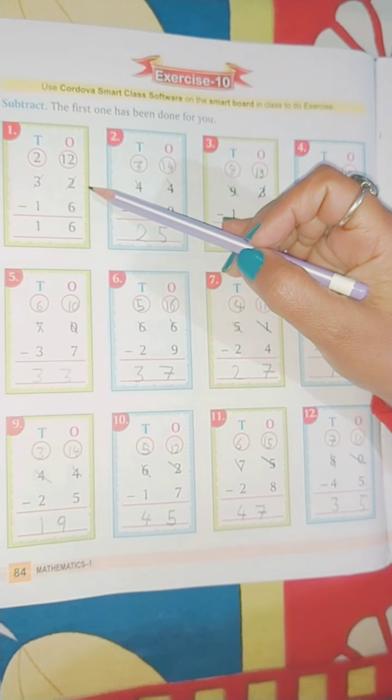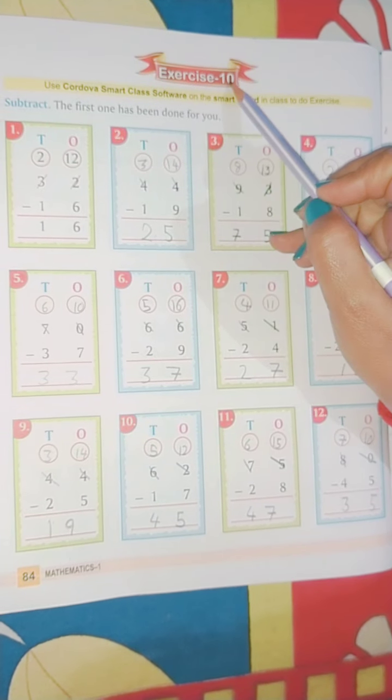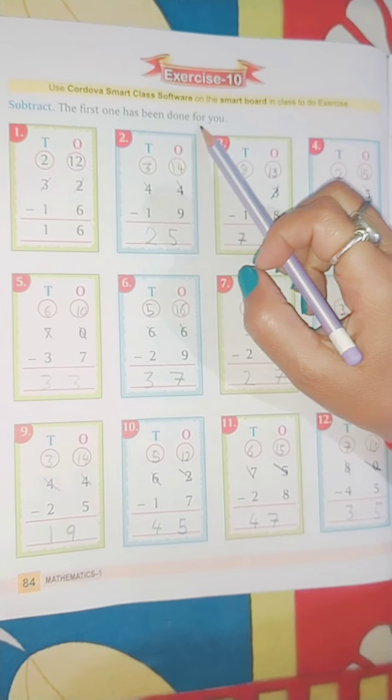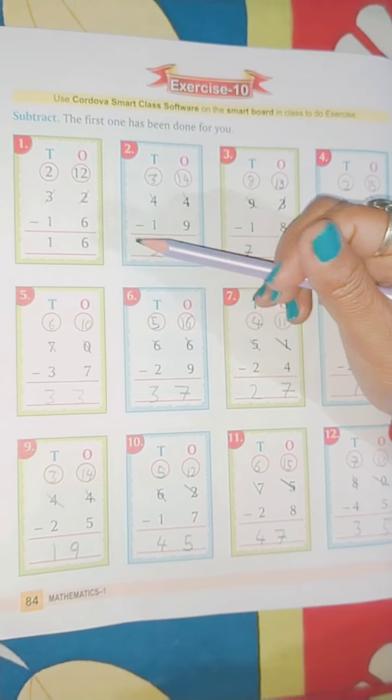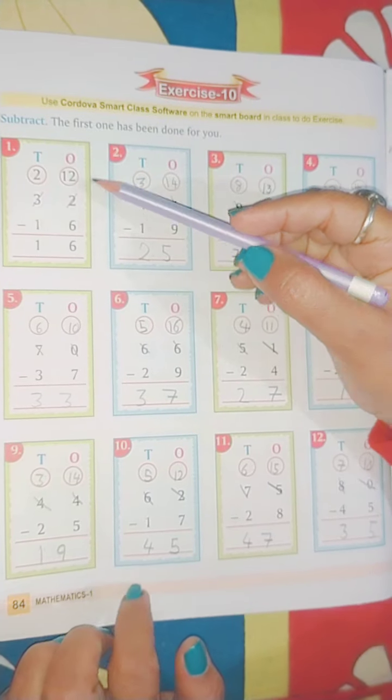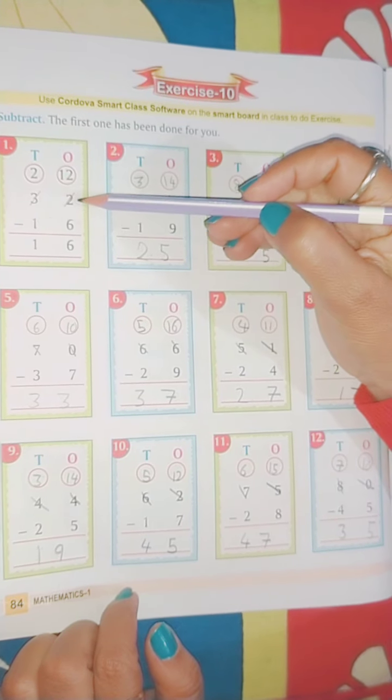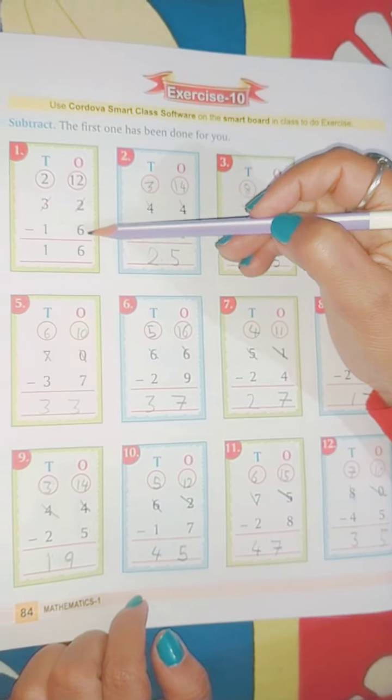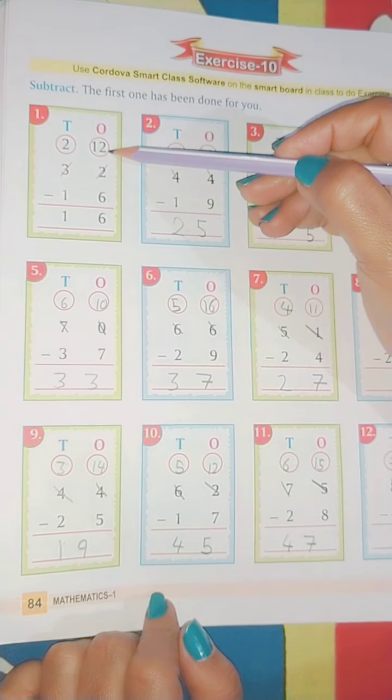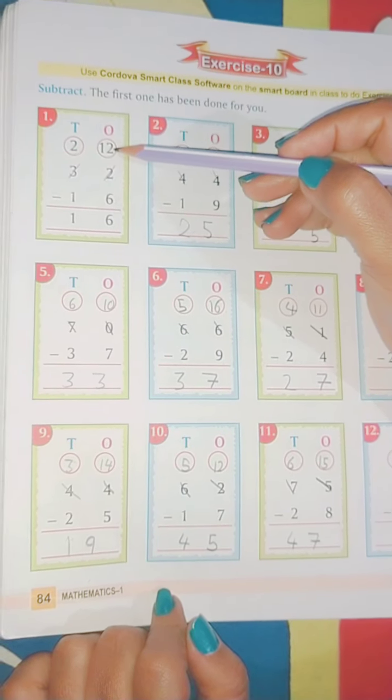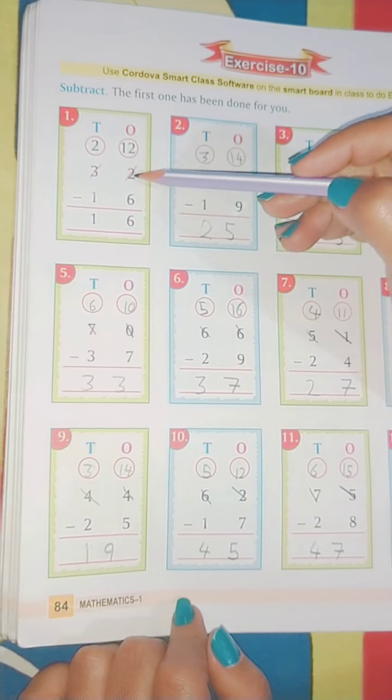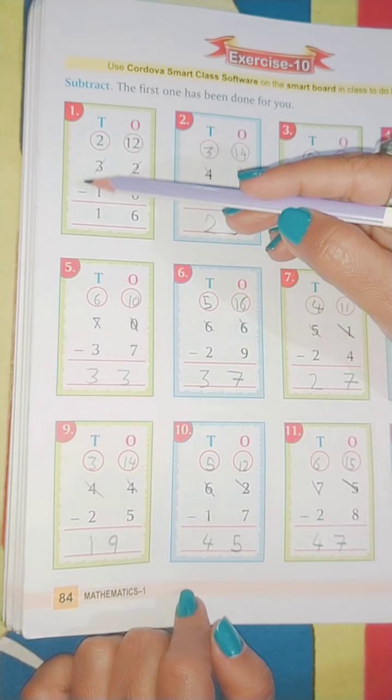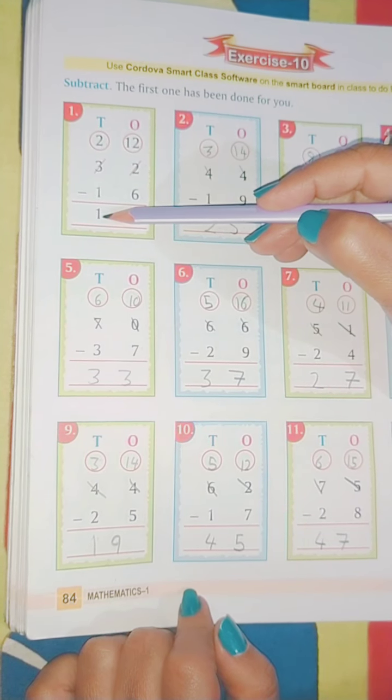Now move on to the next page, page number 84, Exercise 10. The first one has been done for you. First sum आपके लिए कर रखा है. Same thing I am repeating again and again so you can understand better. Now 32 minus 16. 2 is smaller and 6 is bigger. So 3 से borrow करेंगे one number, so 2 becomes 12. Cut 2 and write 12. 12 minus 6 is 6. And here 3 gave one number to 2, so now only 2 is left. So 2 minus 1 is 1. Understood?